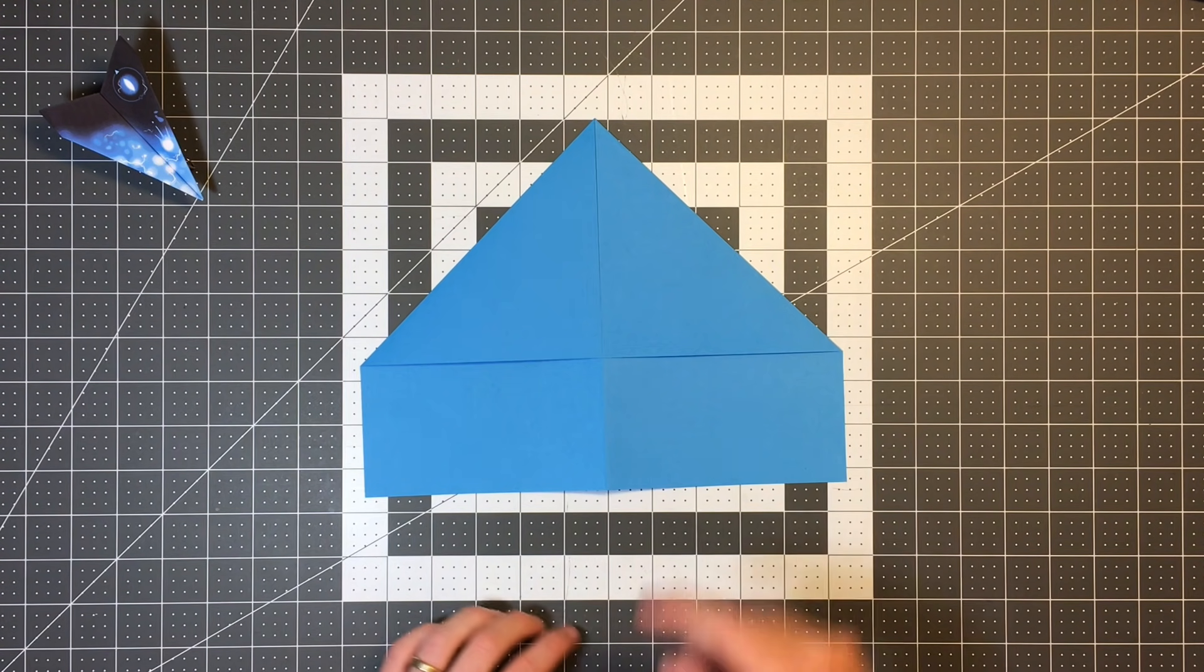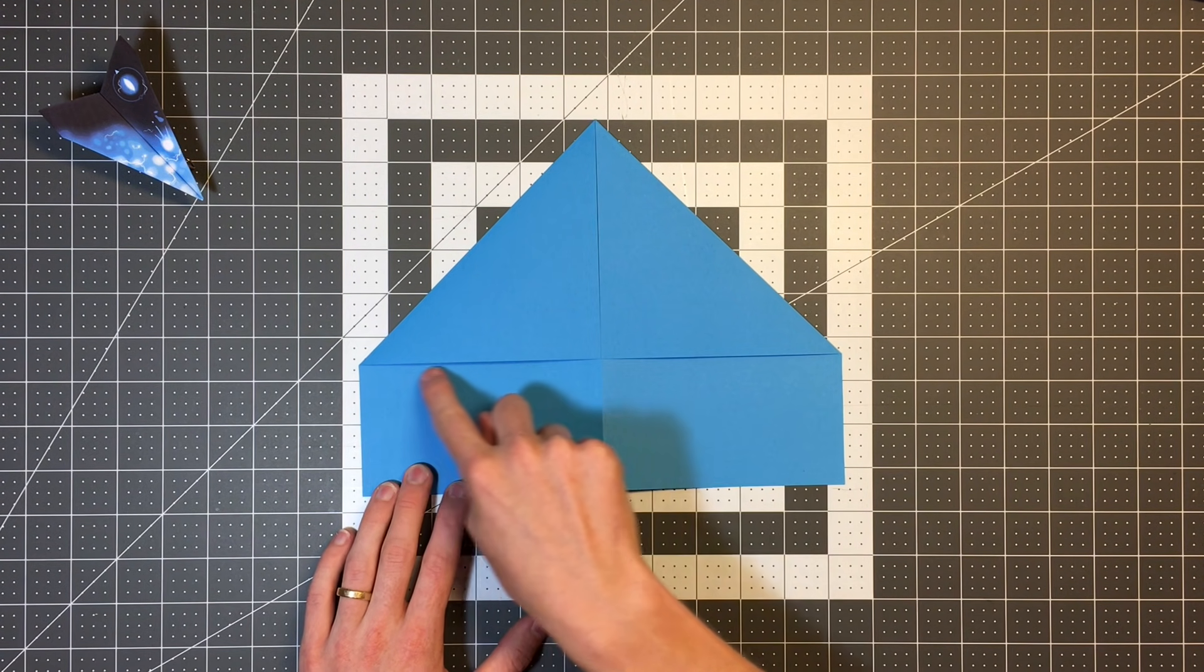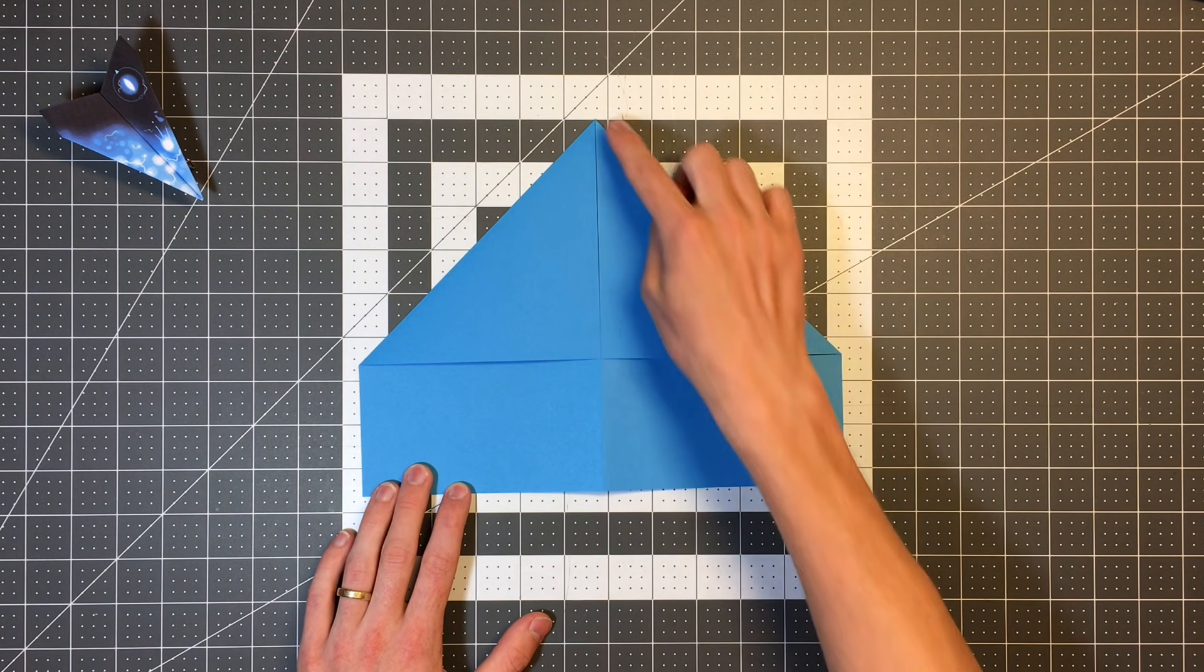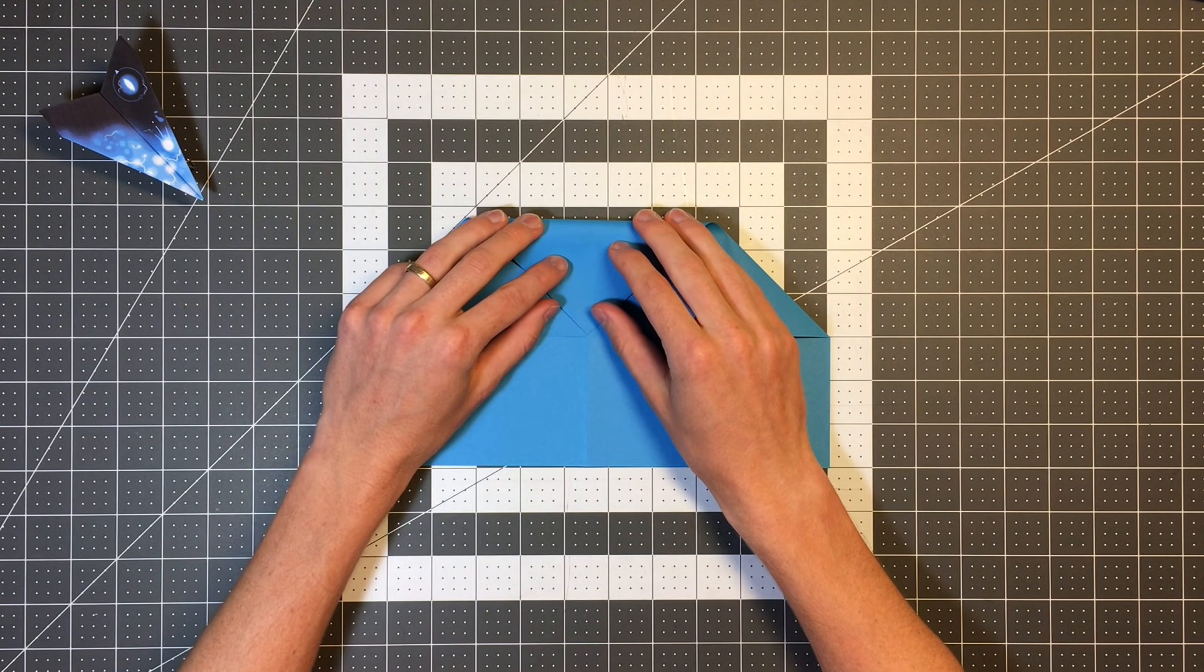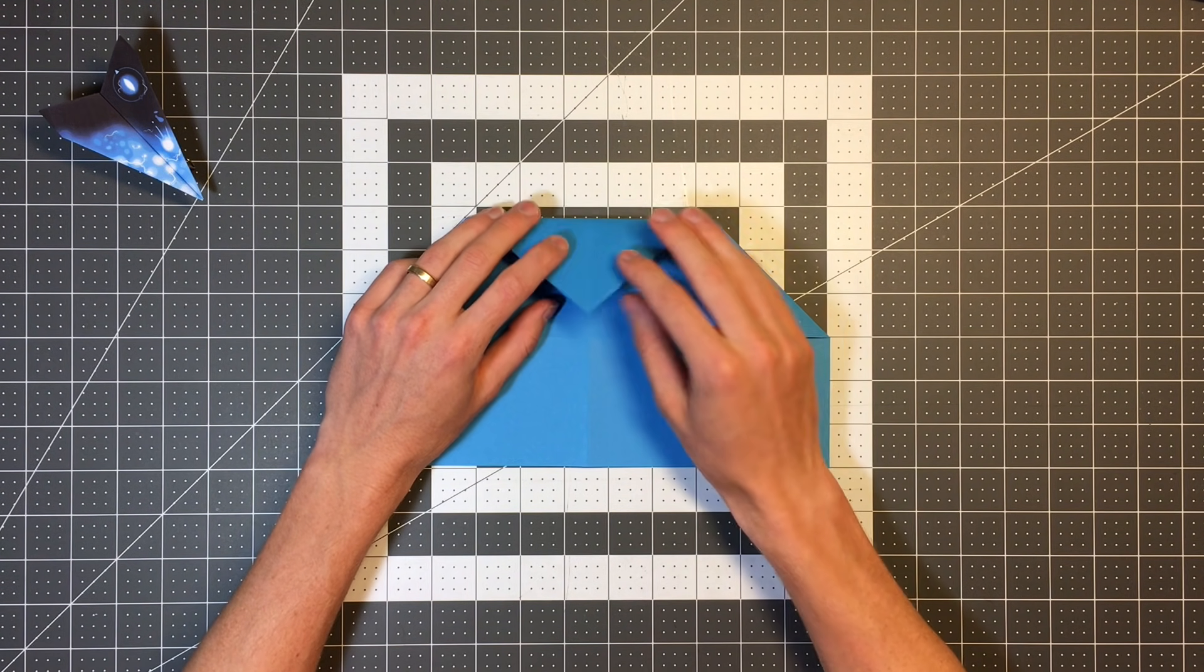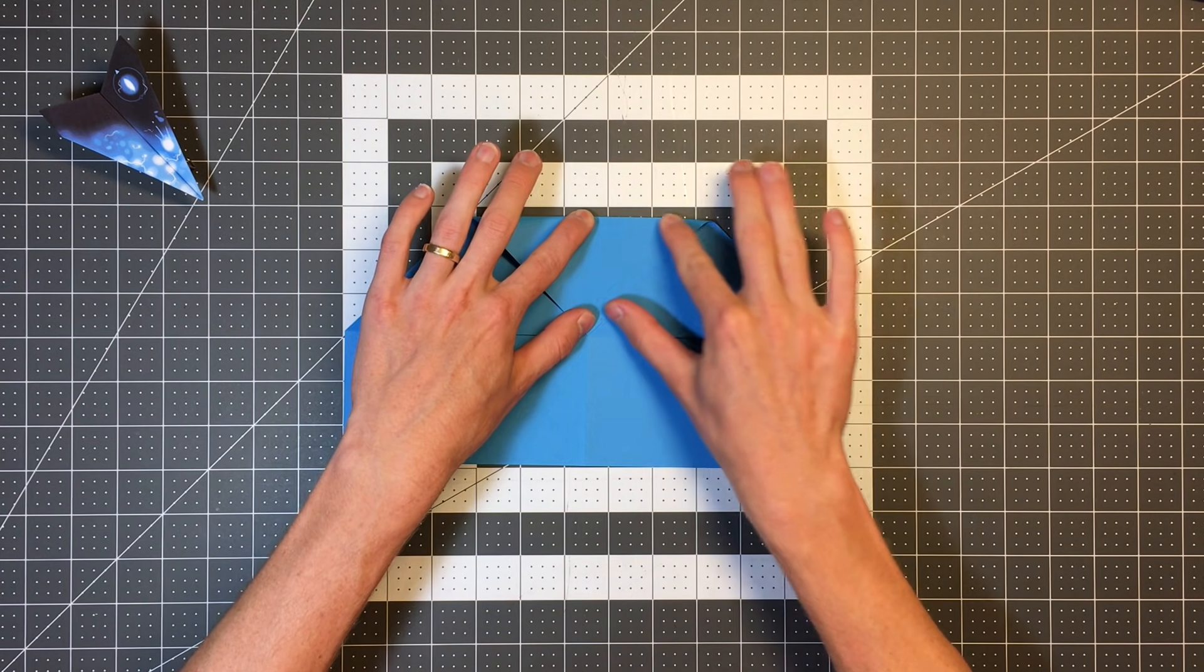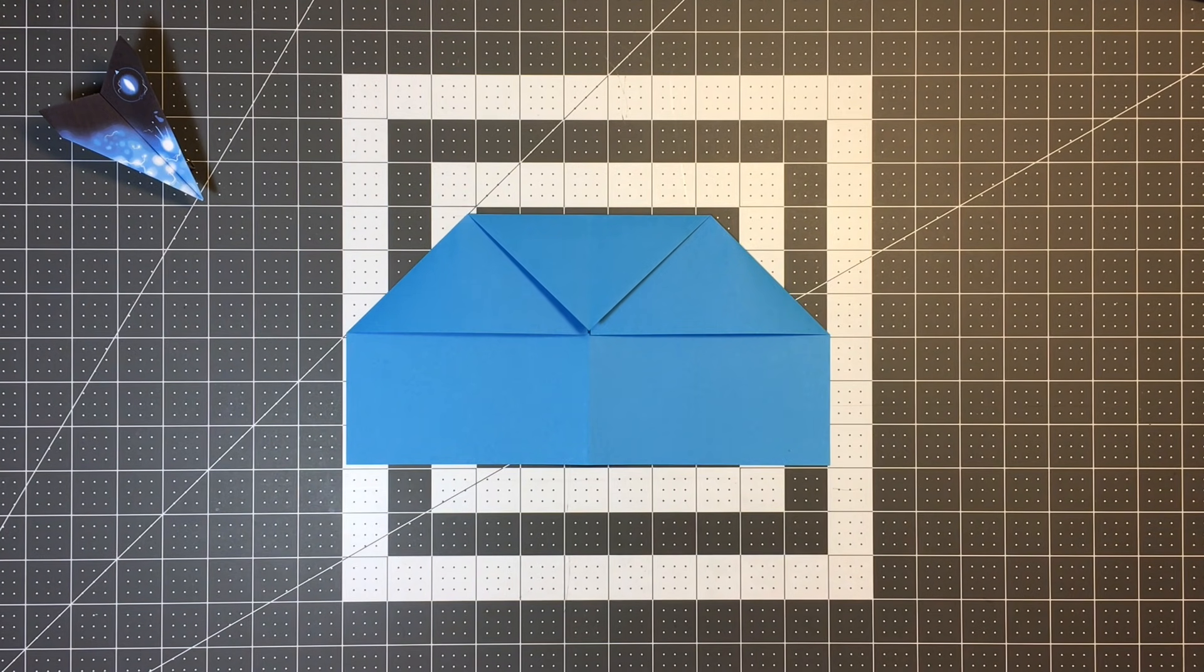The next step, I want to fold this top point to this point right here along this edge of the triangles. So I want to land the point on the center crease there. And your plane should look like this.